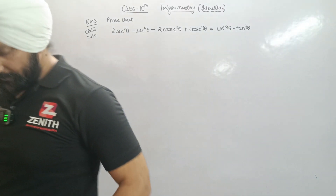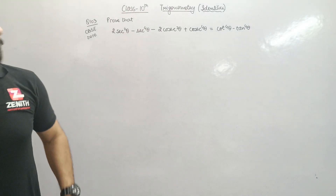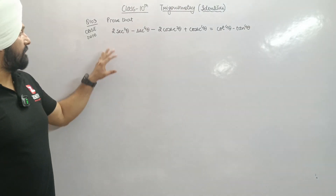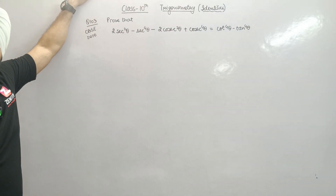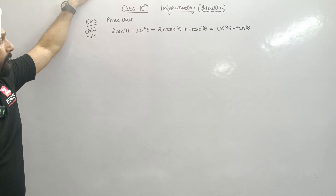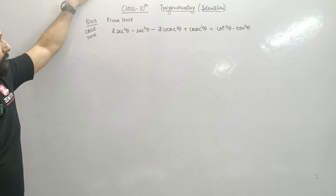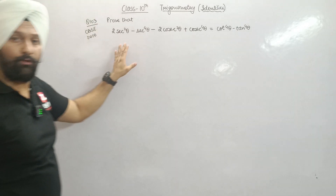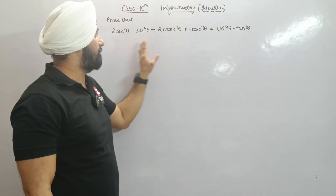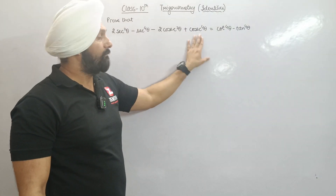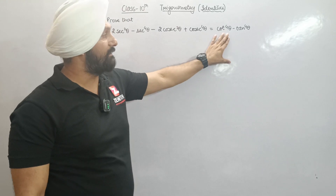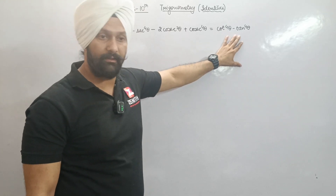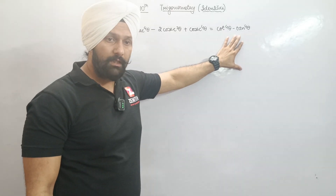Good evening everybody. This is an identity-based question from CBC 2010: prove that 2sec²θ - sec⁴θ - 2cosec²θ + cosec⁴θ = cot⁴θ - tan⁴θ.